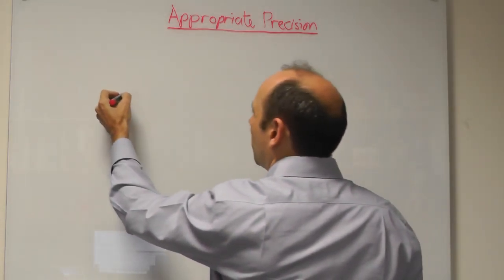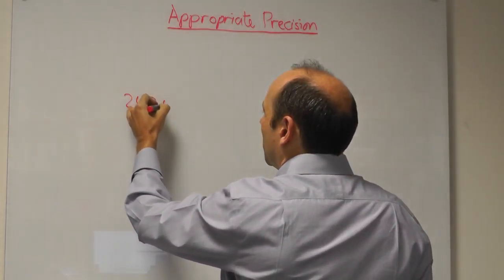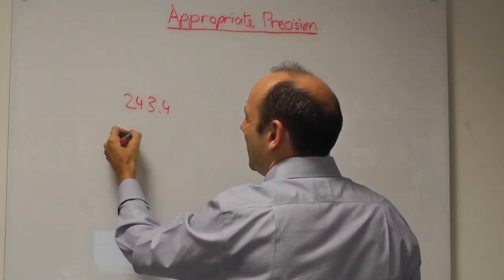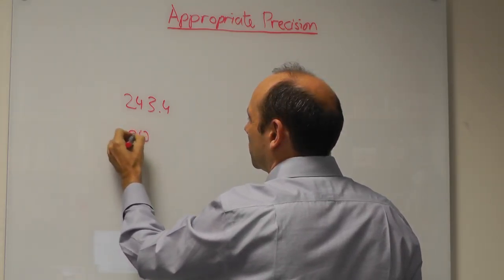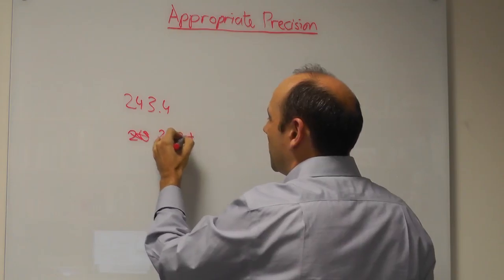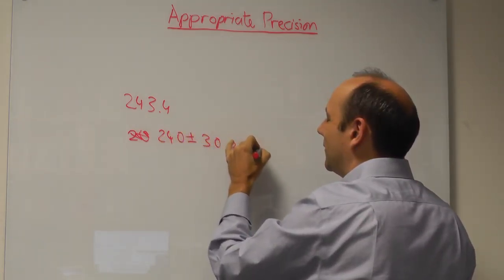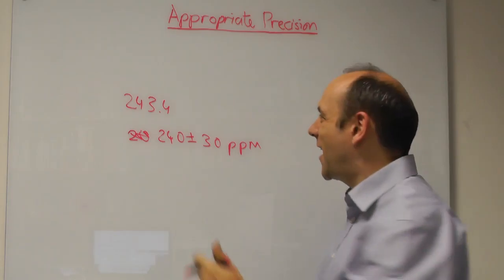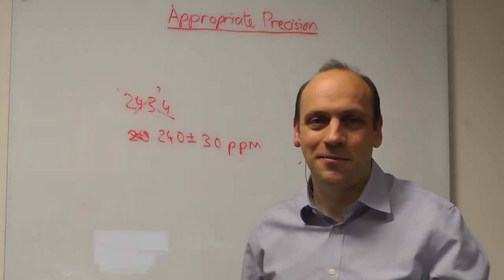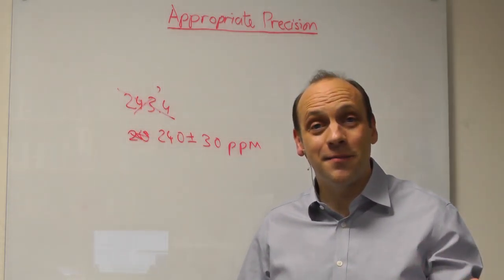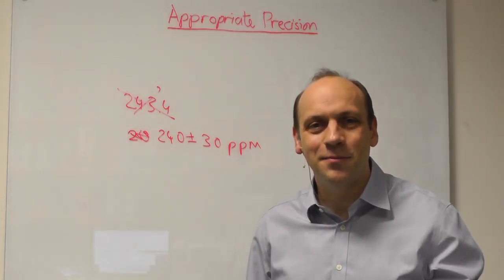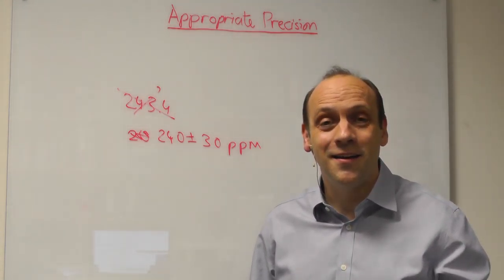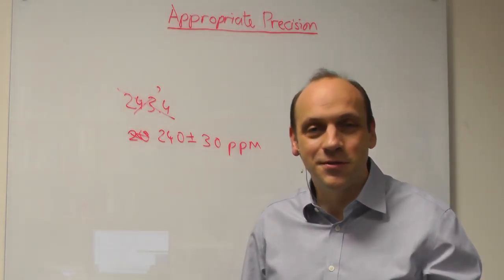So essentially, that number of 243.4, if the precision is only 30, it's really 240 plus minus 30 parts per million. So that's the wrong thing to do. In this segment, what I want to show you is how to handle precision and uncertainty correctly when writing lab reports or scientific documents.